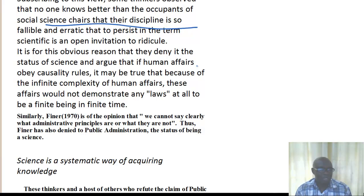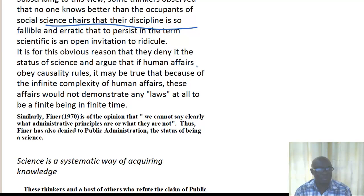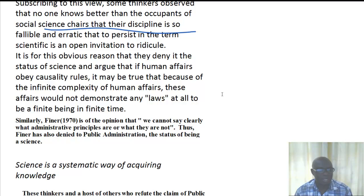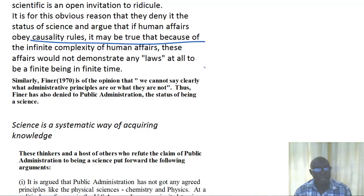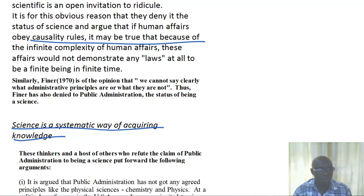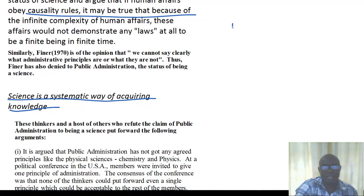It is for this obvious reason that the status of science has been denied to the discipline of public administration. Those who argue that it is not a science share one thing in common: they say that human affairs do not obey cause and effect rules as happens in the sciences. Human affairs are very complex and difficult to demonstrate in a particular law like we have in physics, chemistry, and biology. This argument is based on the definition of science — that science is a systematic way of acquiring knowledge.